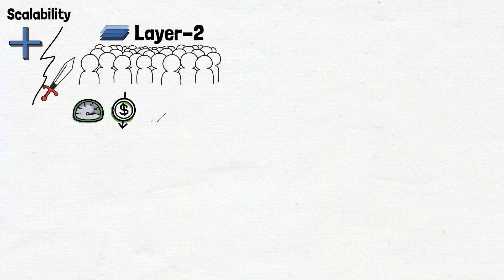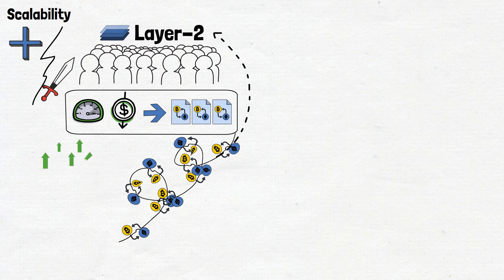Scalability, despite being a benefit, also presents a challenge. As more users flock to Layer 2 networks seeking faster and cheaper transactions, congestion might occur within the solutions themselves. While they relieve pressure from Layer 1, they may encounter their own bottlenecks, hindering the scalability they promise.